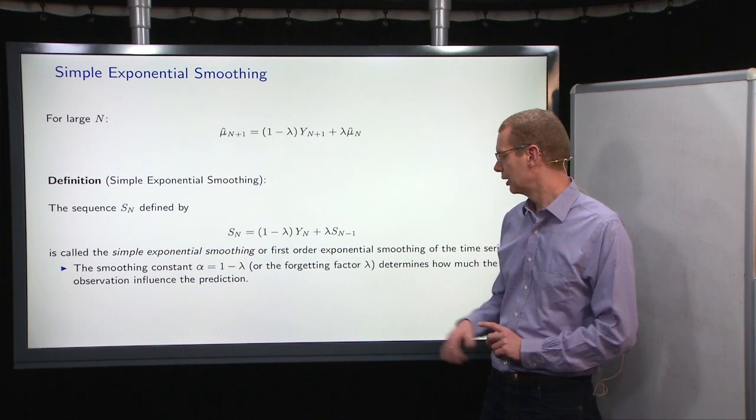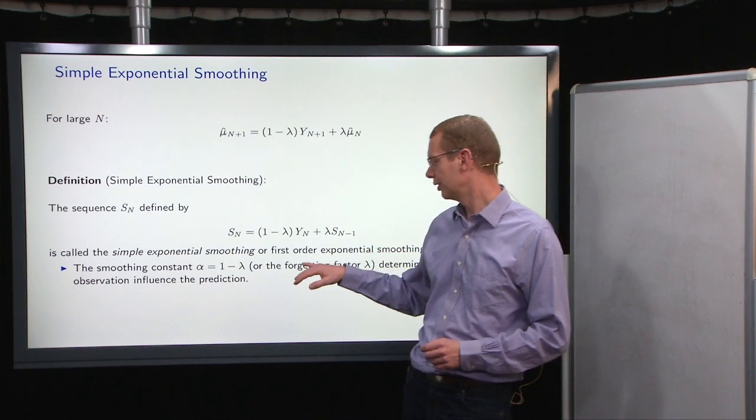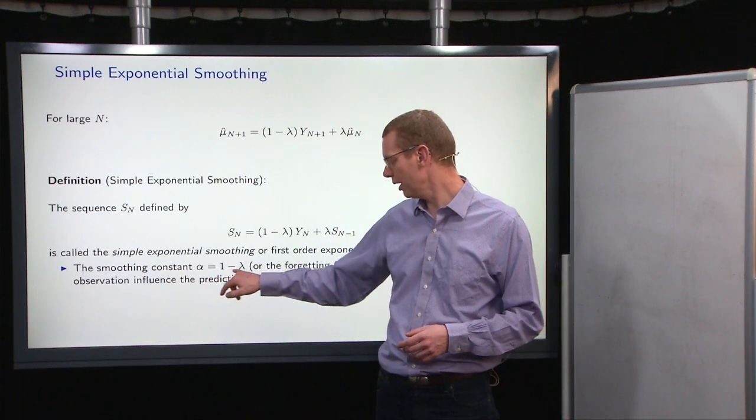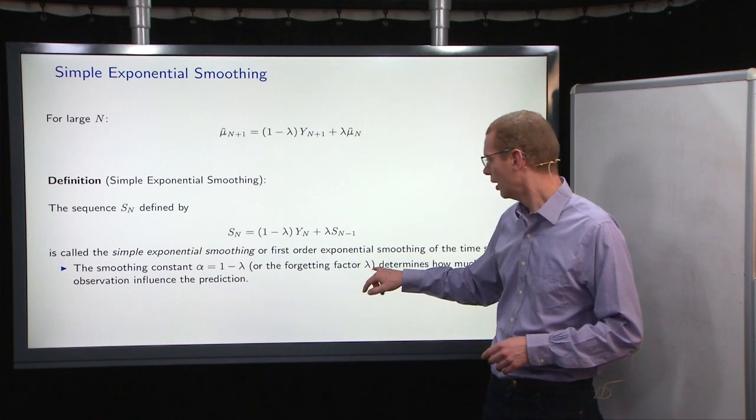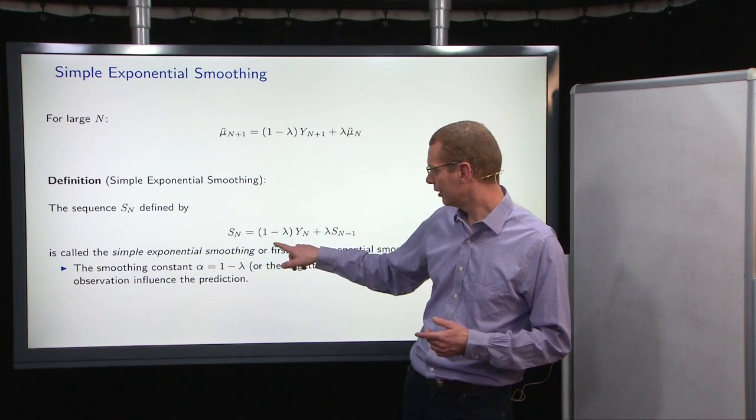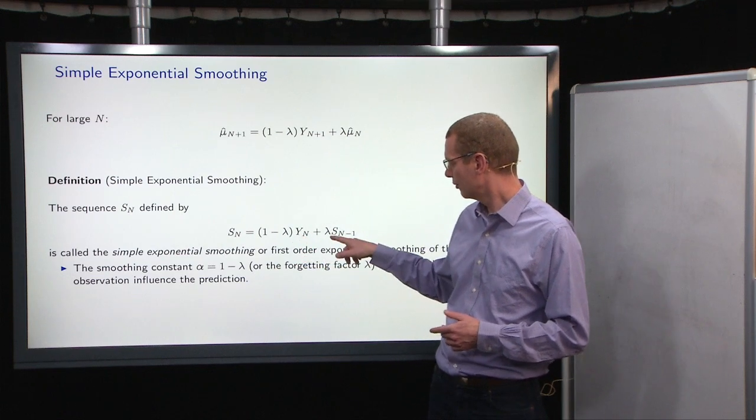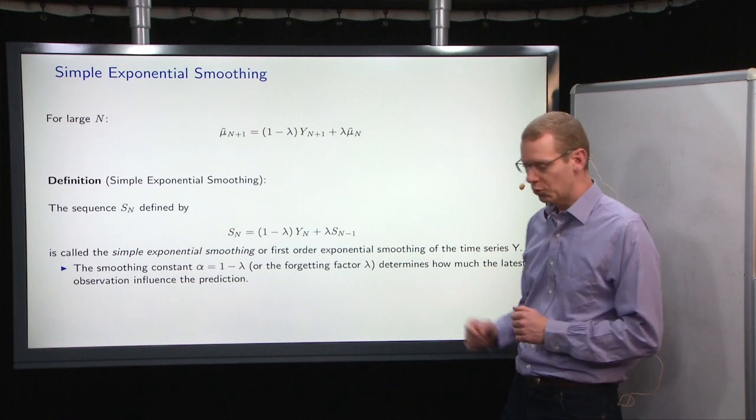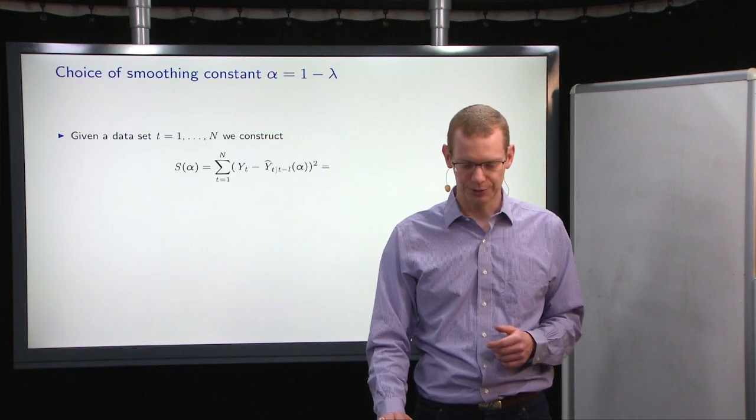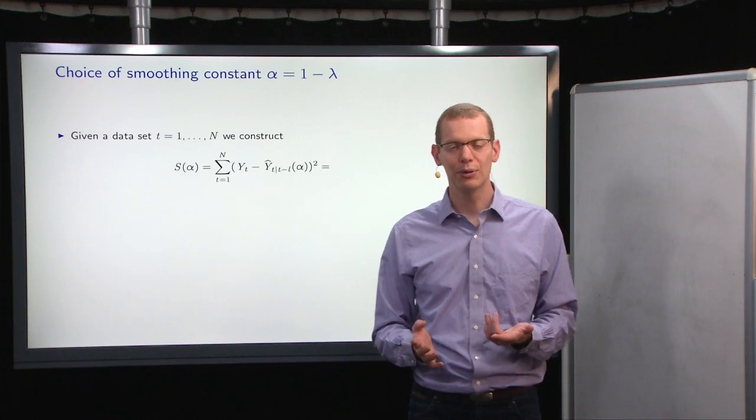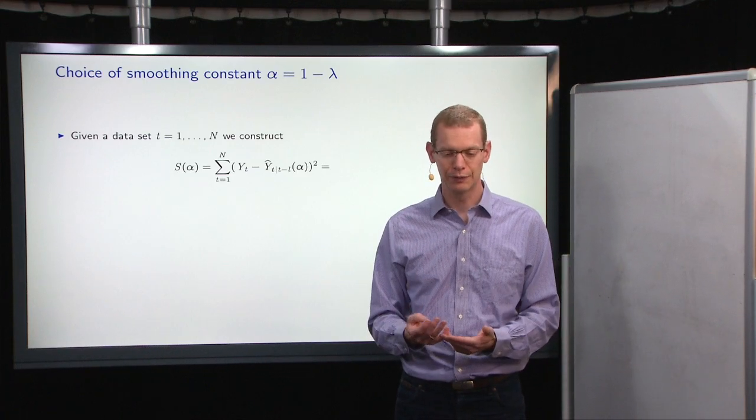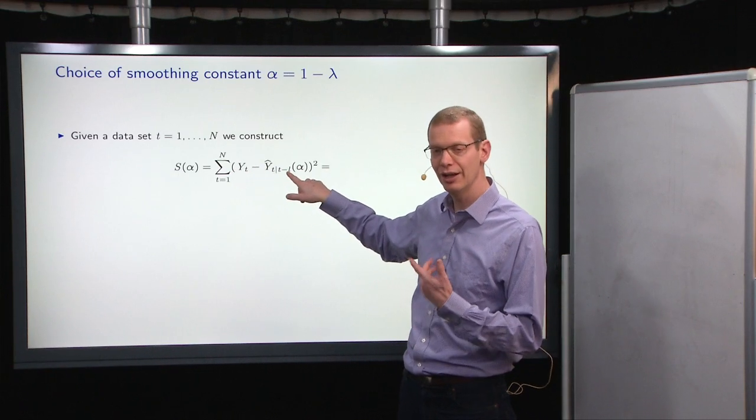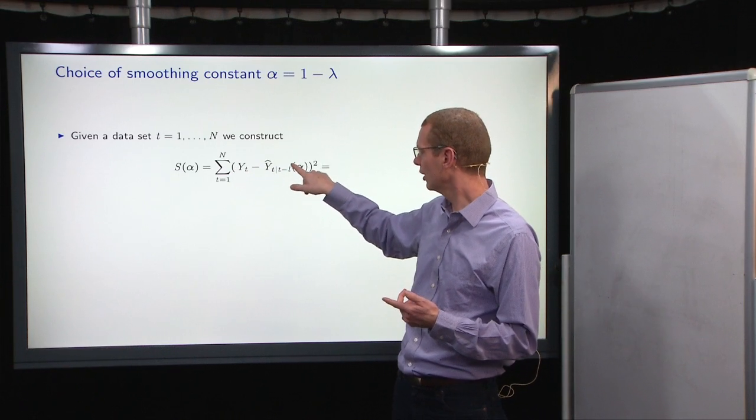What is left now is how do you choose the smoothing constant? Often also times called alpha, defined as one minus lambda. So alpha is then the weight on the most recent observation, where lambda is the weight on our previous estimate. So how do we choose this? Often what we've done previously is to minimize the sum of squares. So what we'll do now is that we'll look at our prediction errors.